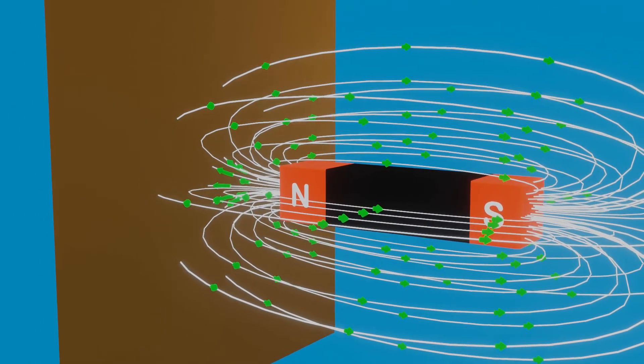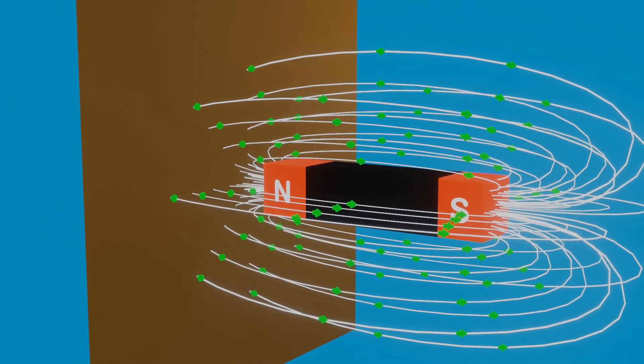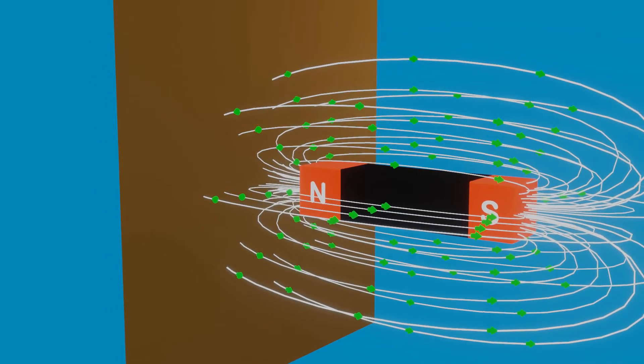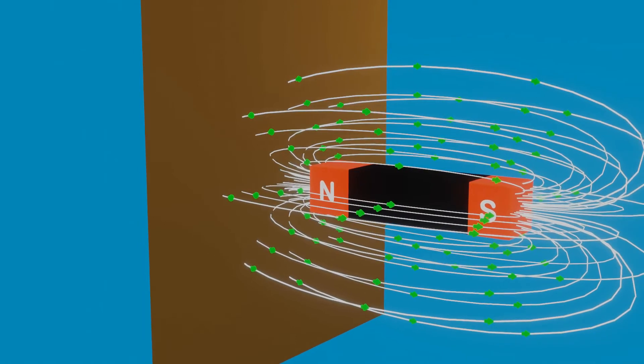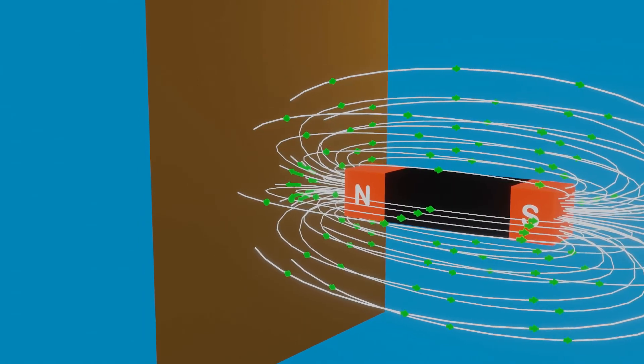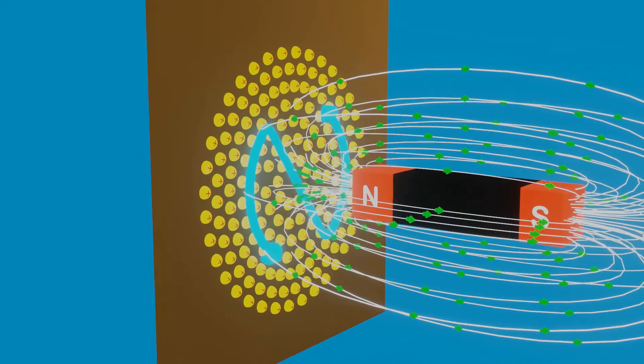When we move north pole of a bar magnet towards the conducting plate, magnetic flux passing through the conducting plate changes. Now, to oppose motion of the magnet, charges present in the plate start flowing in an anti-clockwise direction.